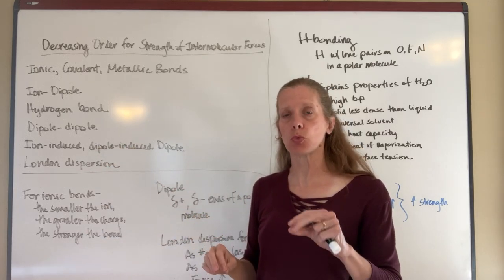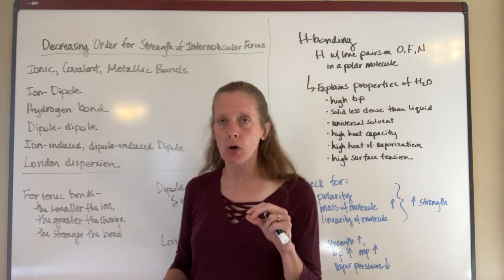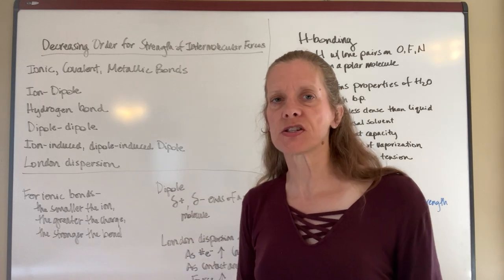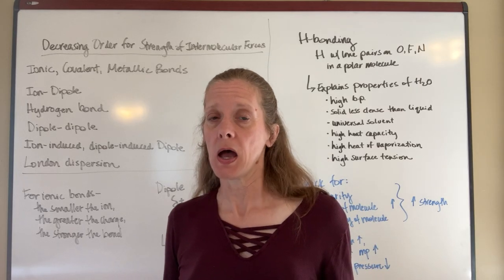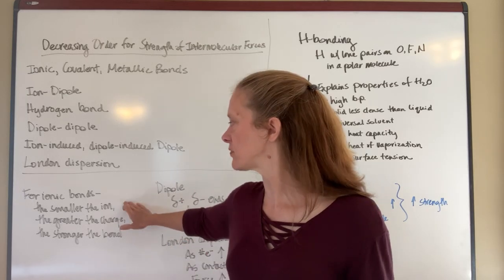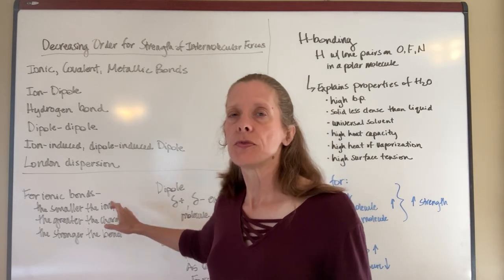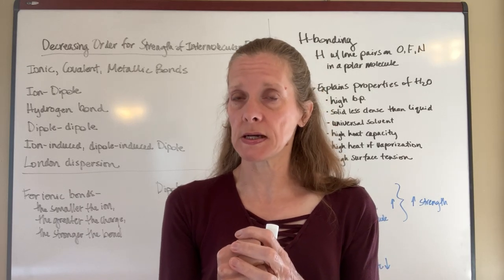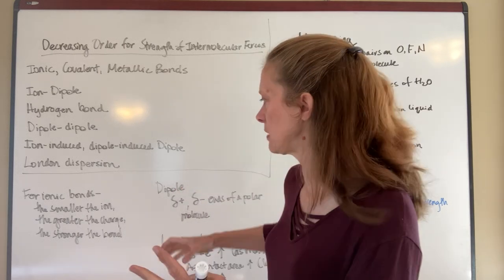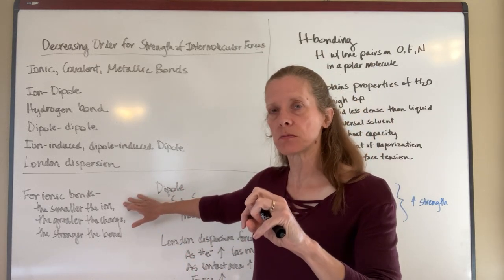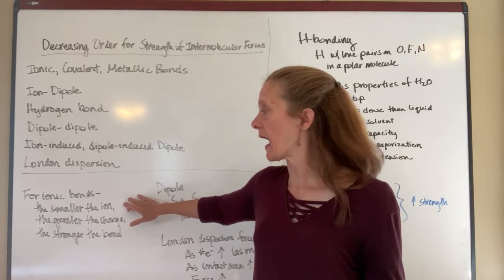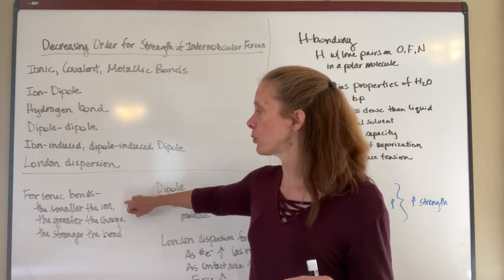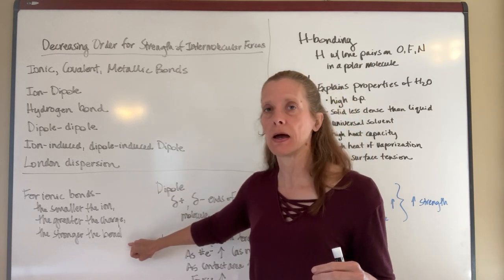When you're trying to determine which ionic bonds are stronger than others, there are two characteristics to look for: the size of the ion and the amount of the charge. It's pretty intuitive that the greater the charge, the stronger the attraction. It may be less intuitive that the smaller the ion, the stronger the bond. The smaller the ion, the closer the electrons are to the protons in the nucleus, so the nucleus can pull more strongly on neighboring atoms' electrons. So look for higher charge and smaller size to identify stronger ionic bonds.